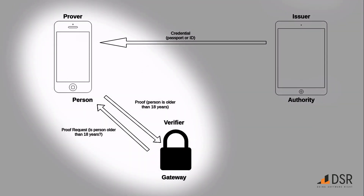The issuer or authority can even be offline, and the verification will still work. This way, the user can be granted secure access without ever disclosing any of their private information.